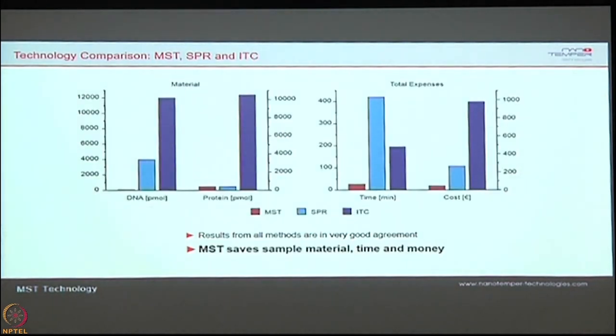What is the biggest advantage? With SPR, you always have a chip, you immobilize one protein and pump different buffers and ligands — it involves a lot of method development, optimization, and cost. With ITC, you need higher volumes of sample. The biggest advantage of MST is you do not require higher volumes, always use lower concentrations, and the assay is done in 10 minutes with no cost beyond the glass capillaries, which are the only consumables — costing 5 euros per assay.